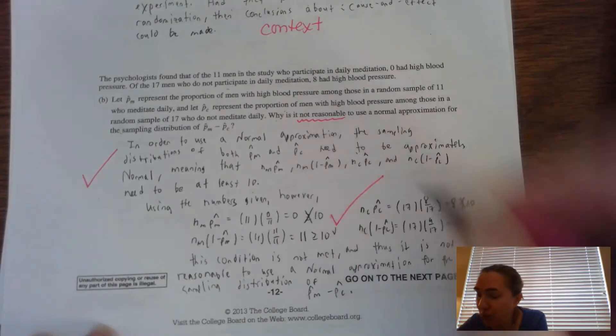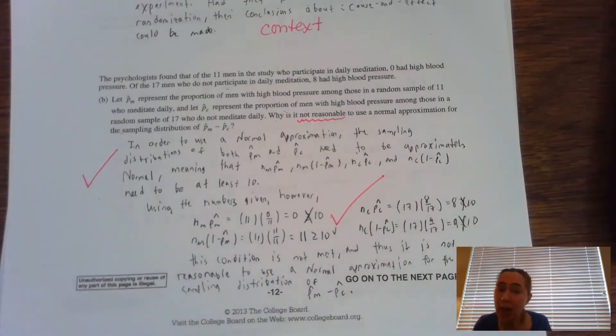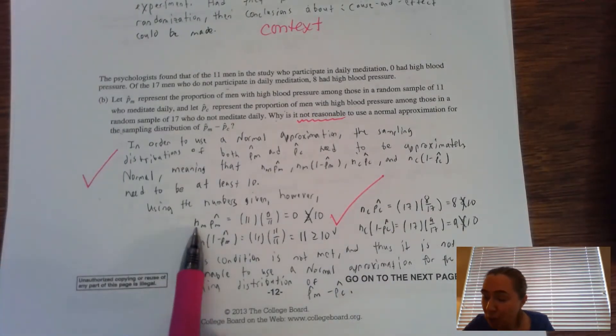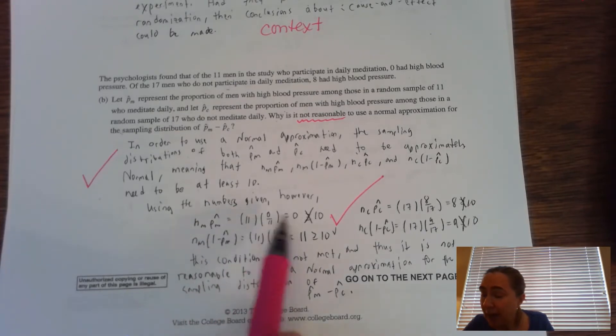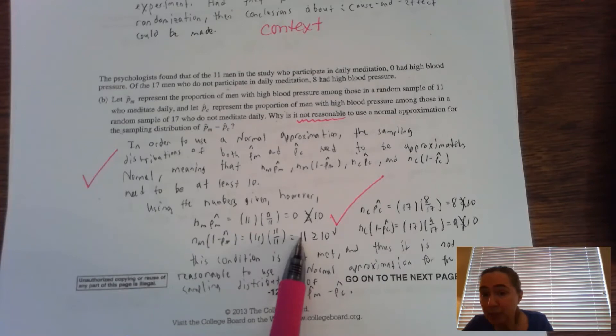So work is shown here. So I'm going to give you a check mark. If you do not show your work, that means you don't show the formula. You don't show substitution in the formula and you don't show what the resulting n times p hat, n times q hat would be. You're not going to get credit.